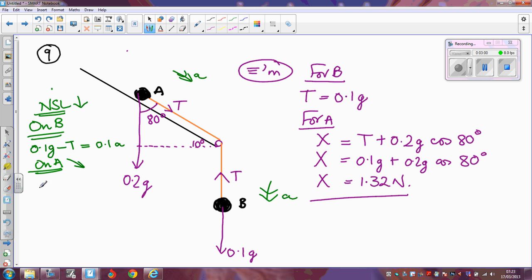Now, if we look at the forces acting down the slope, there's nothing acting up the slope at all, but we've got two forces acting down the slope, the tension, and also the component of the weight acting down the slope. So the combined force on A going down the slope is T plus 0.2g cos 80 degrees, and that's going to equal the mass of A, which is 0.2, times the acceleration. Now, if I add these two equations together, there's number one, and there's number two.